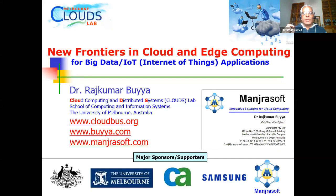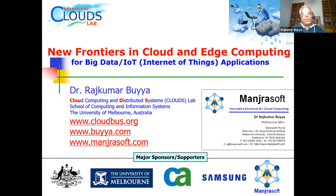I'm going to discuss new frontiers in cloud and edge computing. The requirements from cloud and edge computing are driven by real-world applications, particularly two kinds: big data — meaning a mushroom of data — and Internet of Things applications where real-time requirements mean data is generated, analyzed, and responses created.